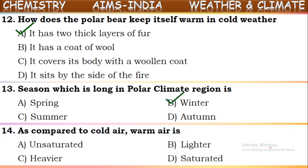Next question: as compared to cold air, warm air is what? Cold air is heavier than warm air. When the sun shines brighter, the air becomes hot. Hot air is lighter in weight, so it moves up. The answer is: warm air is lighter than cold air.